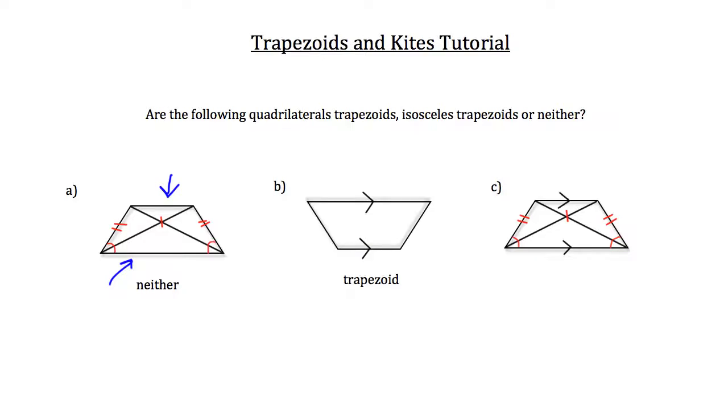And lastly, let's look at C. In C we can tell that the bases are parallel to each other, the legs are congruent, the diagonals are congruent, and there is a congruent pair of base angles. So this would be an isosceles trapezoid.